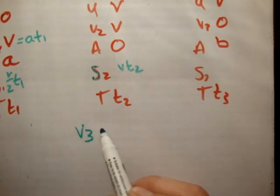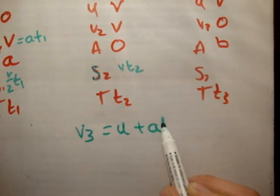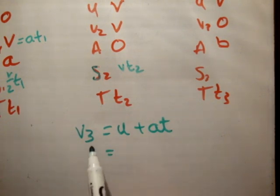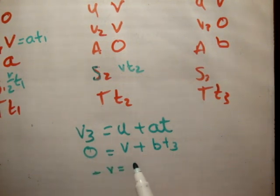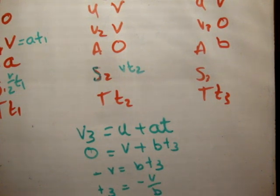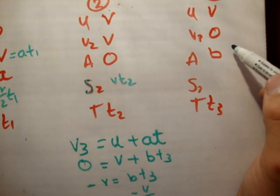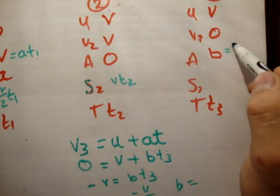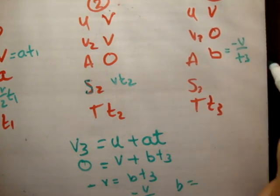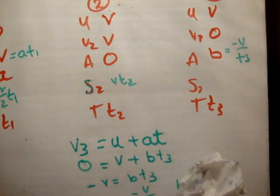So, we'll say v3 is equal to u plus at is equal to. We know v3 is equal to 0. And, the initial speed is v plus b times t3. So, we know that minus v is equal to b times t3. Or, you could say t3 is equal to minus v over b. Like that. So, let's note this up here.